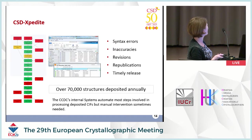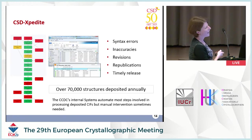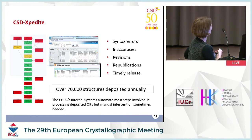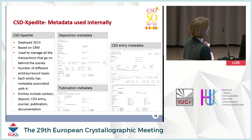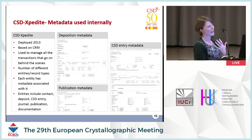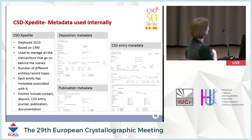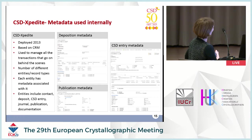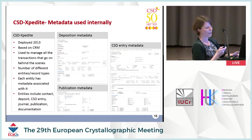To deal with the increasing volume of data received at CCDC, we launched a new infrastructure in 2013 called CSD Expedite. This tries to automate as much of the process as possible while keeping manual parts where scientific input really adds value. The boxes in green show the automated parts of the workflow. This new system is based on Microsoft Dynamics CRM and is used to manage all the transactions and interactions that go on behind the scenes — not just CSD entries but a number of different entities or record types, each with its own metadata.